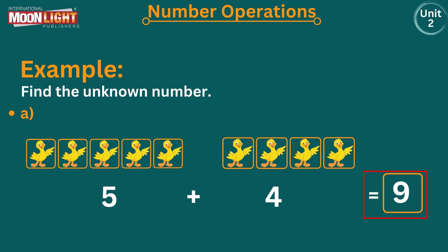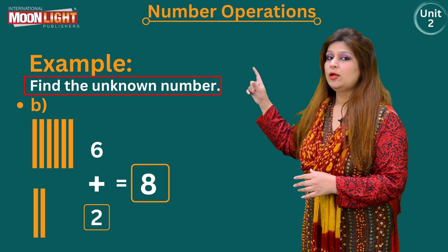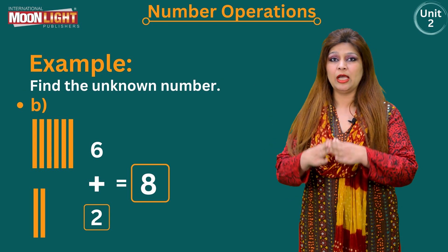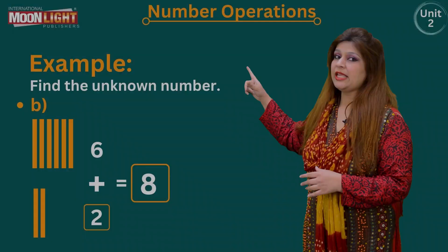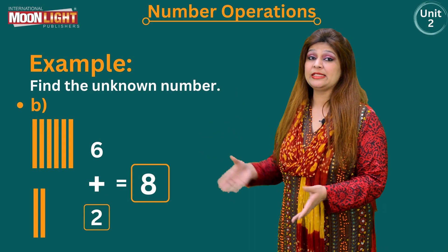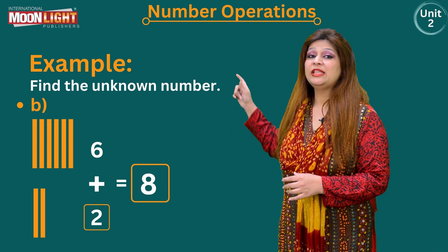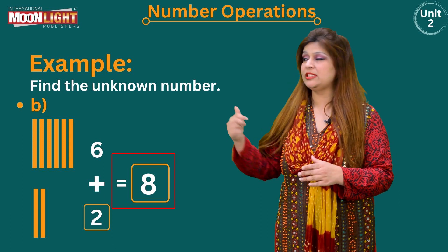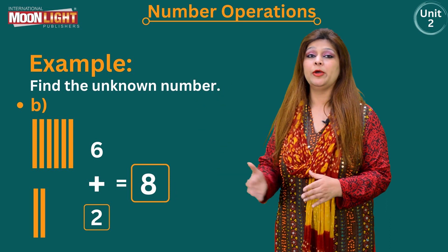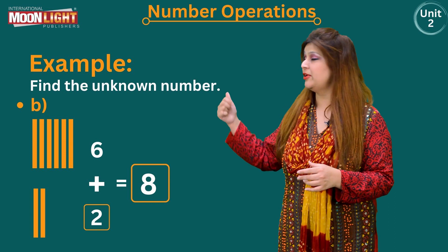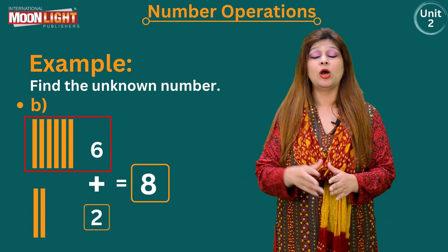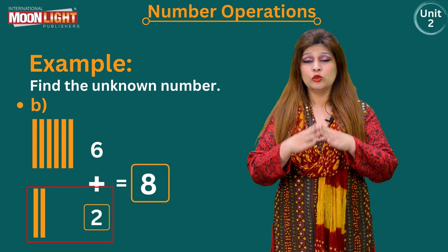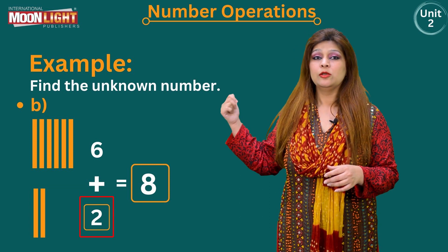Now we solve an example where one addend is missing. Check Part B: six plus an empty box equals eight. We draw eight lines because eight is the sum total. Then cut six lines — the first given number. Count the remaining lines: two lines are left. So write the number two in the empty box. The second addend is two.